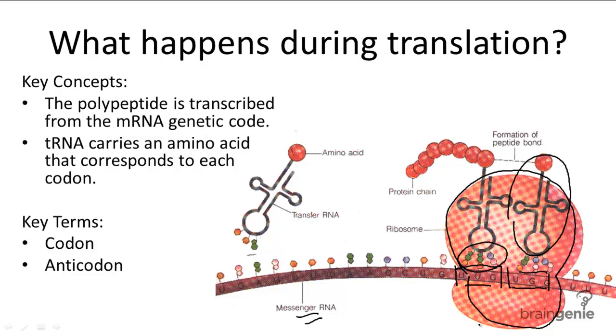When the tRNA molecule comes over with its amino acid and matches up with the codon sequence on the mRNA, the amino acid is released and added to this growing chain of amino acids called the polypeptide chain.